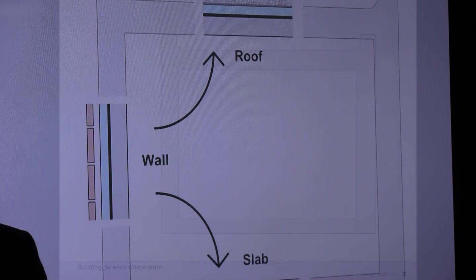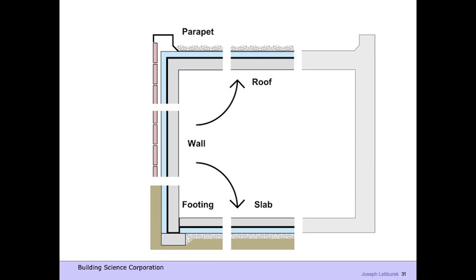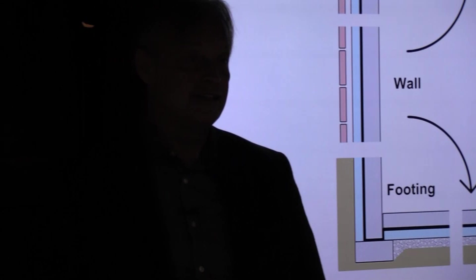So the perfect section would have the perfect roof, perfect wall, perfect foundation. And now you've got to simply connect them. And how you connect them is the magic. Connect the water control of the roof to the water control of the wall to the water control of the foundation, the air to the air to the air, the vapor to the vapor to the vapor, the thermal to the thermal to the thermal. That's it. That's the whole magic of building science.